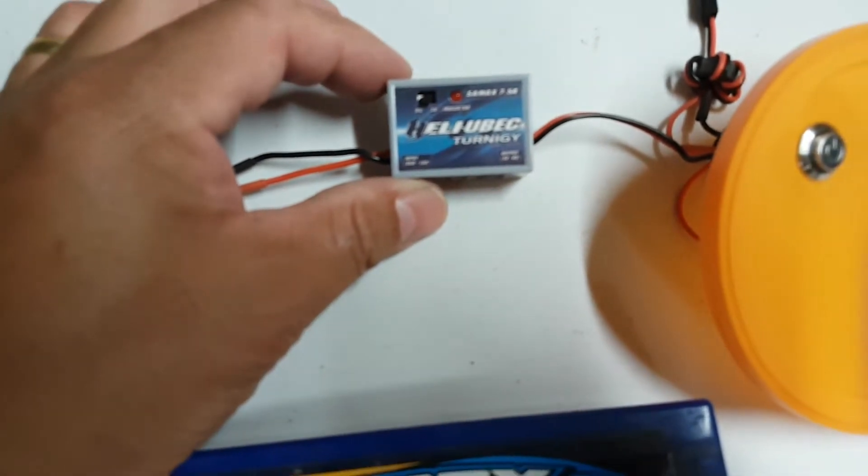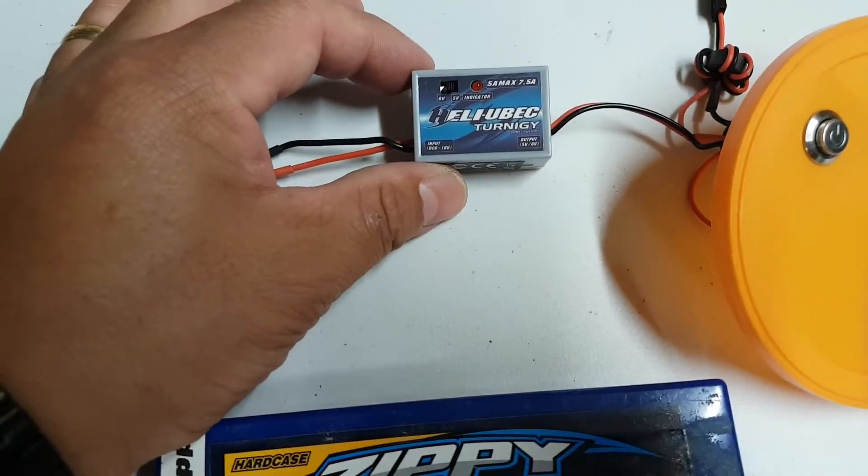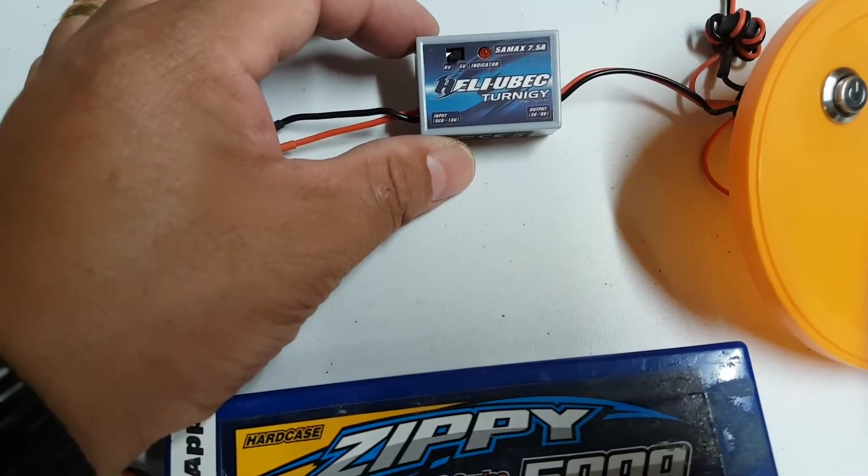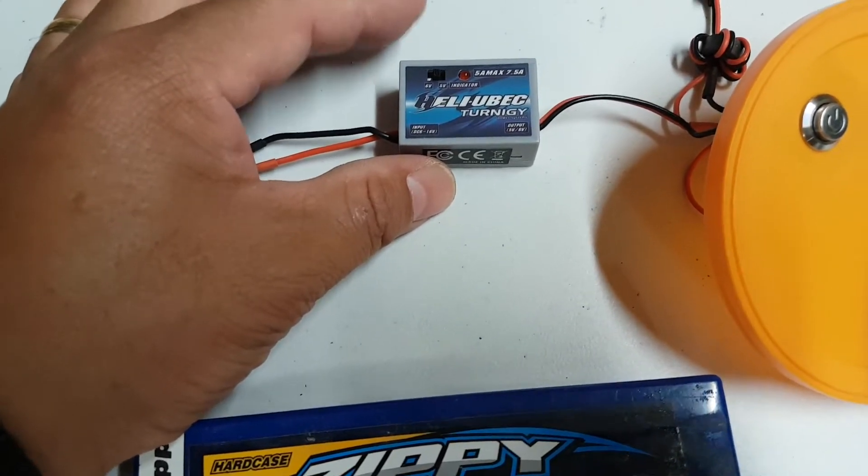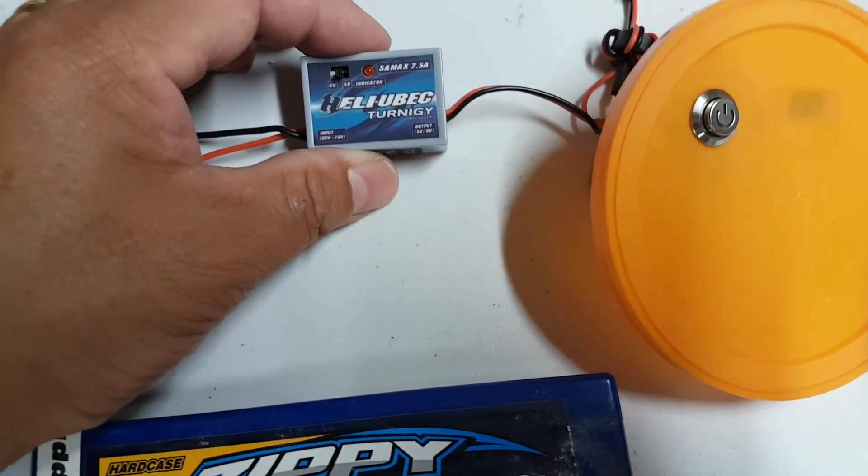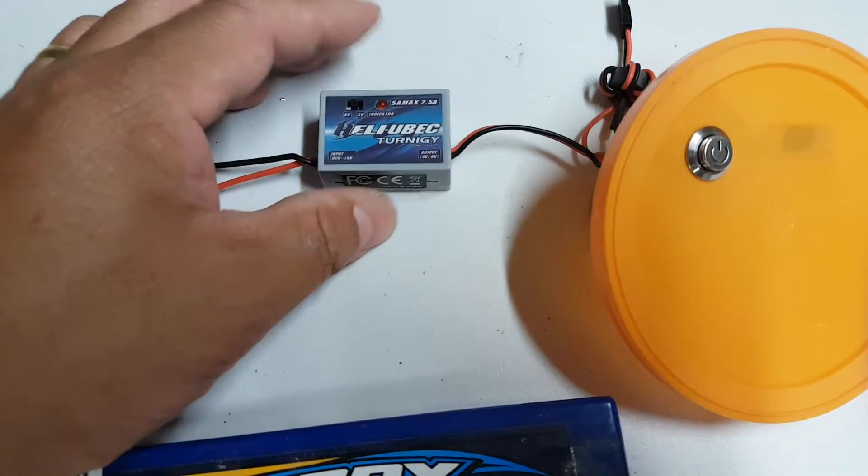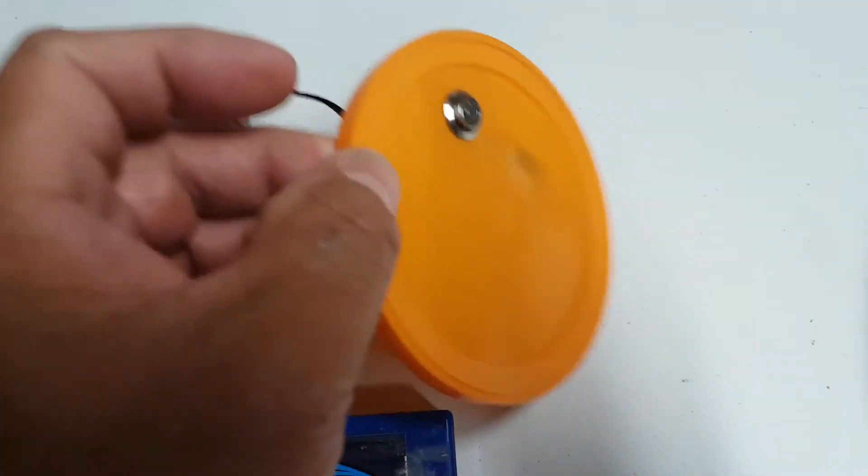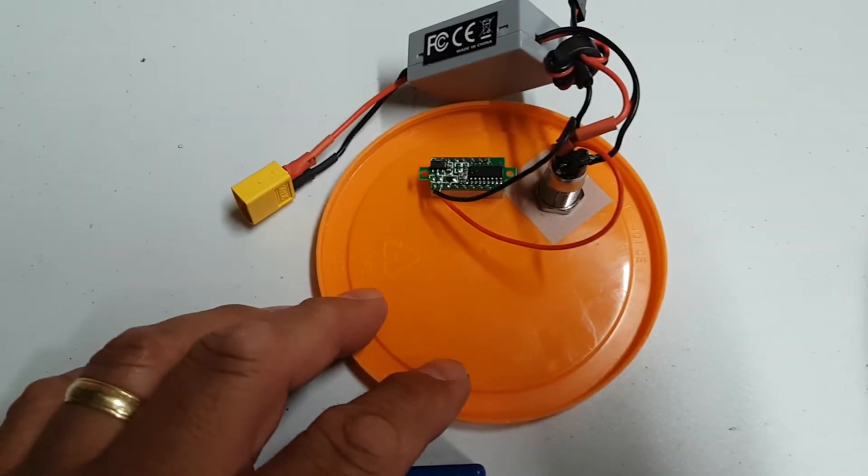I've got a Ubex here with a 5A, 5 and 6V output selectable. I think it has a burst of 8A as well.